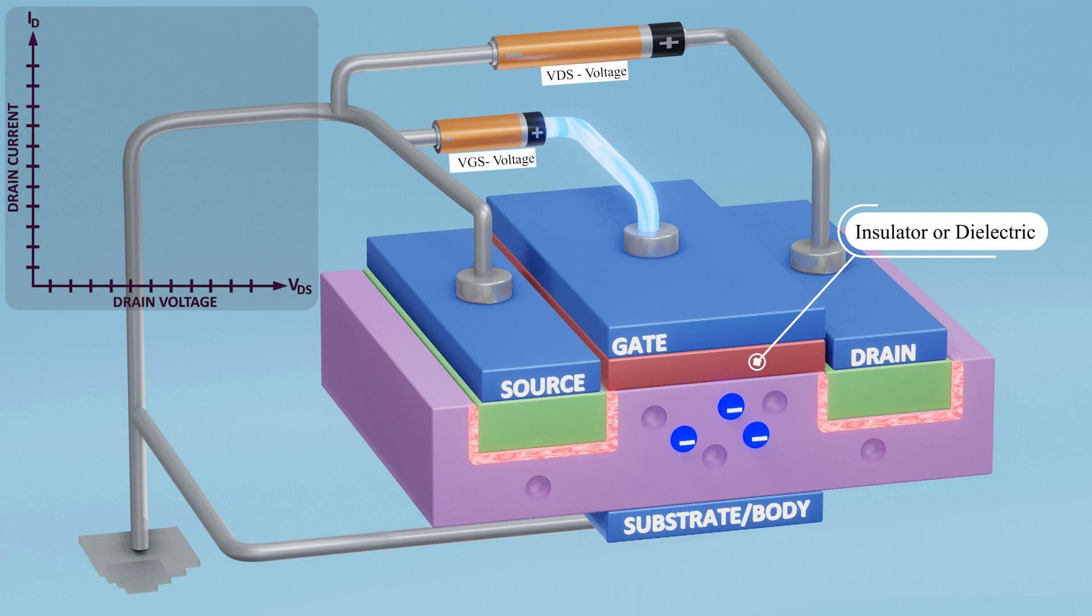Due to the stronger positive charge of the gate, holes start moving away from the gate. This results in a region near the gate becoming negative, or an N-type semiconductor, effectively creating a channel that connects the source and drain internally.